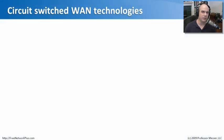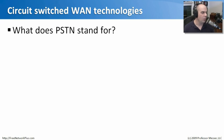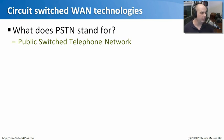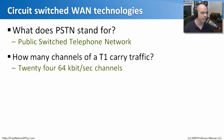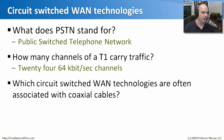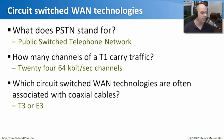Let's review what we've learned about circuit-switched WAN technologies. First: what does PSTN stand for? That is the Public Switched Telephone Network — the phone network used to communicate around the world. Second: how many channels of a T1 carry traffic? There are 24 channels, each carrying 64 kilobits per second. Third: which circuit-switched WAN technologies are associated with coaxial cables? Those were our T3 and E3 connections.